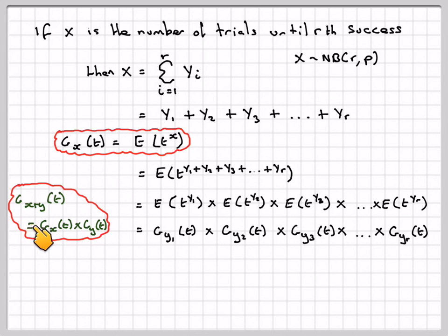This comes from the idea that G of X plus Y of t equals G of X of t times G of Y of t. So this is going to be the same as doing G_Y(t) to the power of r. Now we just calculated G_Y(t) to be pt over 1 minus qt. So the generating function for a negative binomial is going to be pt over 1 minus qt, all to the power of r.